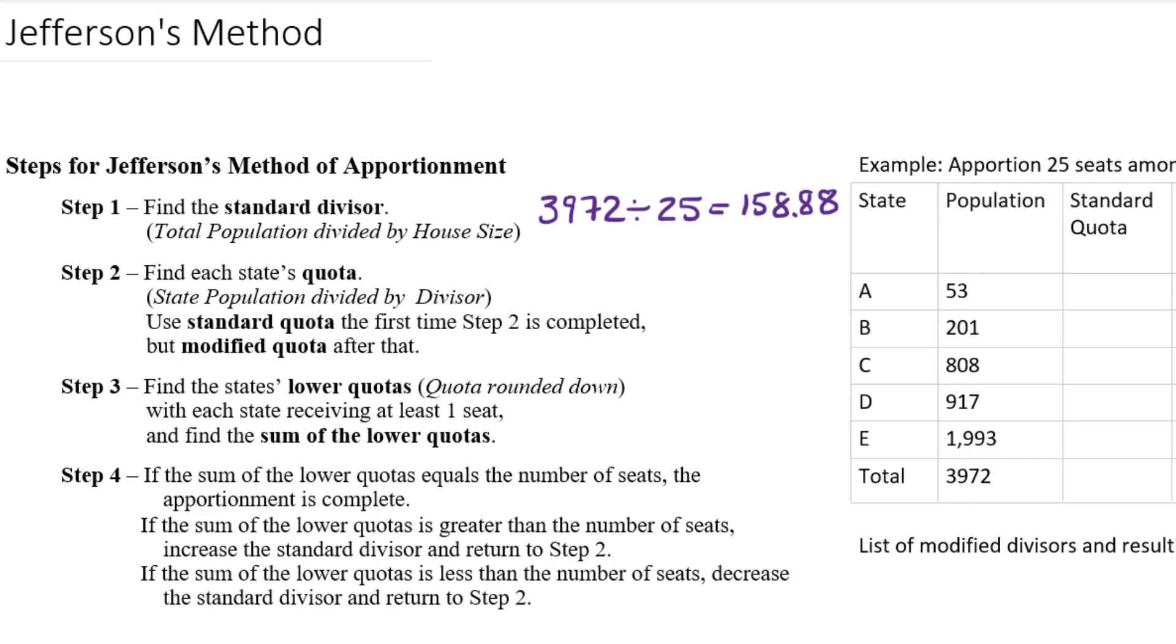The next step is always to take that standard divisor and divide each state's population by it to see how many seats each state should get in a fair situation.